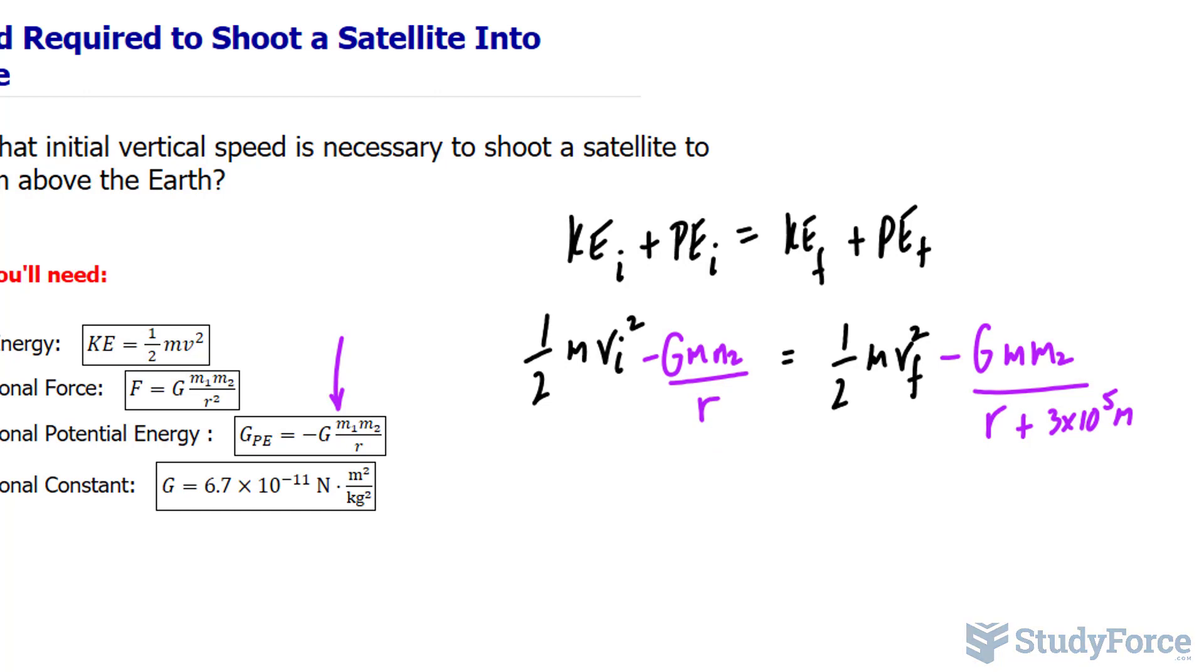What is important is the fact that we have this m and this m that is common amongst both of these terms. And the same applies here. We have this m and that m. So if we were to factor them out on both sides, you would notice that they would cancel out.